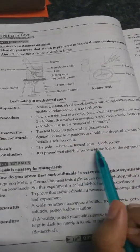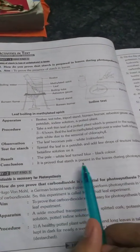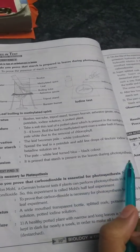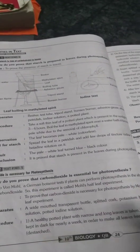So we can say that starch is present in the leaves during photosynthesis. That is, blue-black color of the leaf indicates that starch is produced during photosynthesis. Starch is present in the plant during photosynthesis.